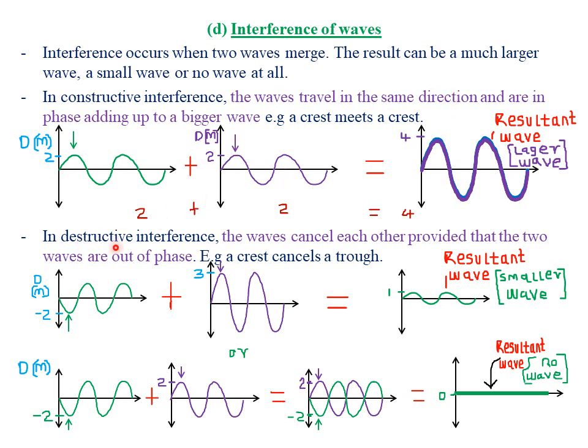The second type is destructive interference. Here, the waves cancel each other, provided the two waves are out of phase. We can review our lessons on Waves 1 for the distinction between in-phase and out-of-phase waves. In destructive interference, the crest cancels a trough, or a trough cancels a crest.